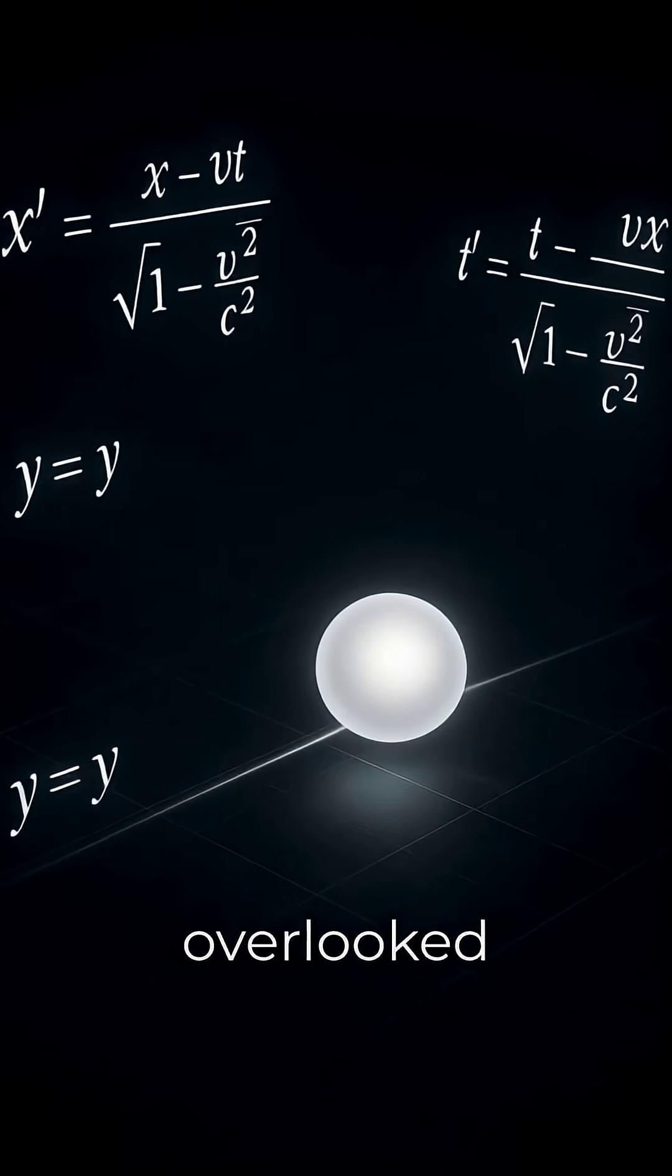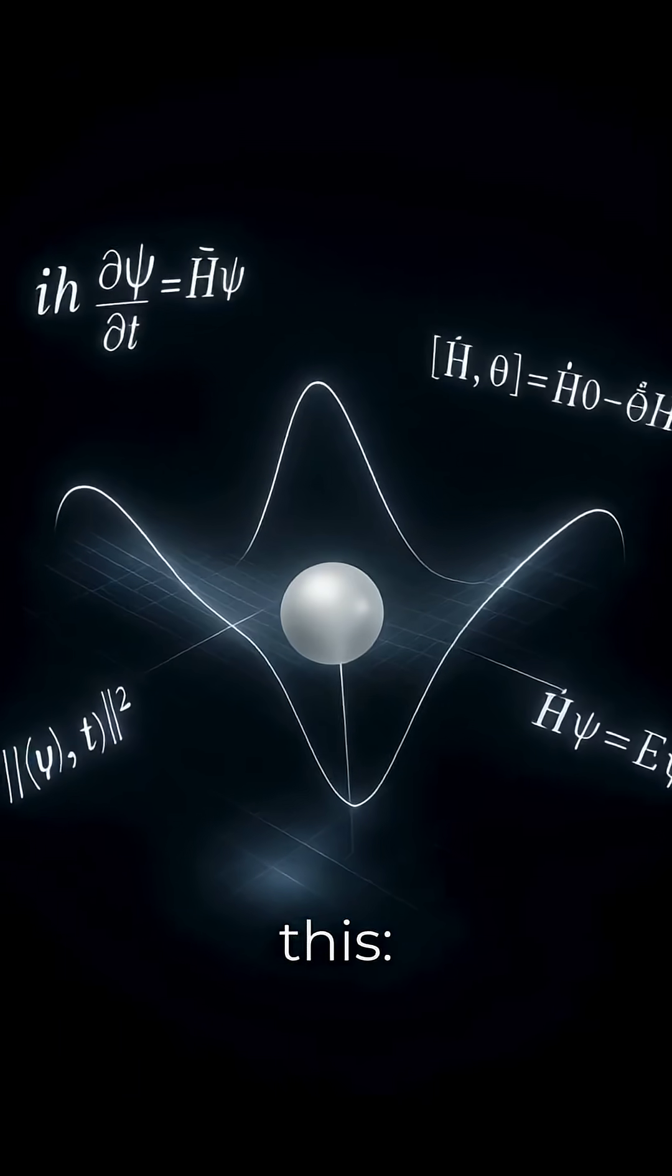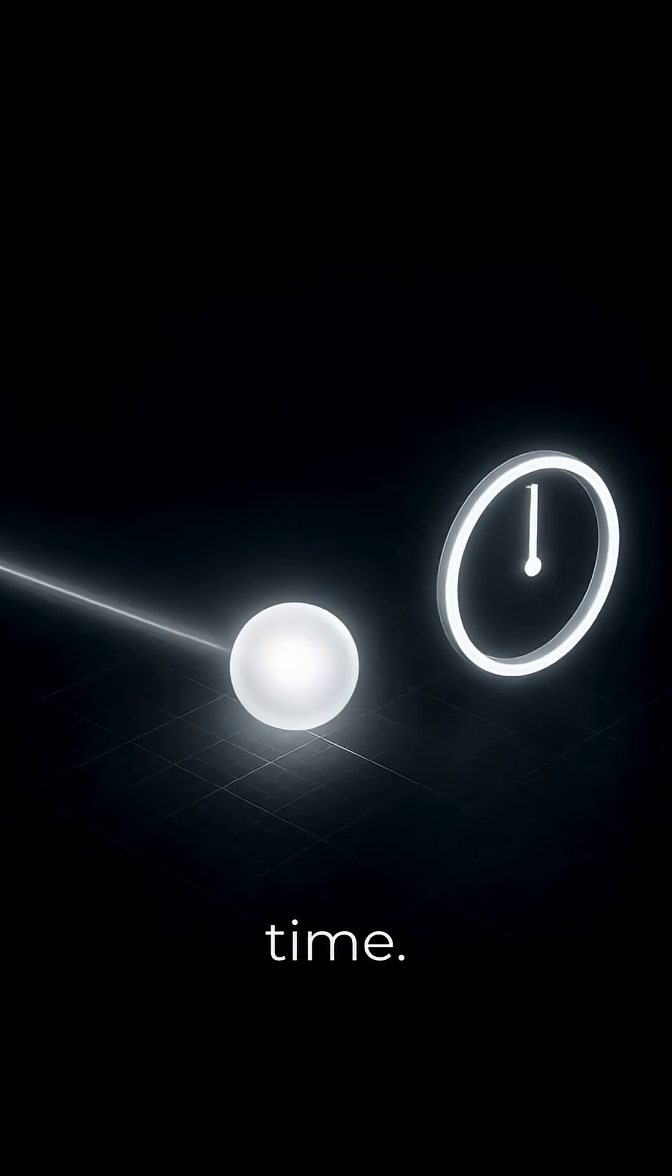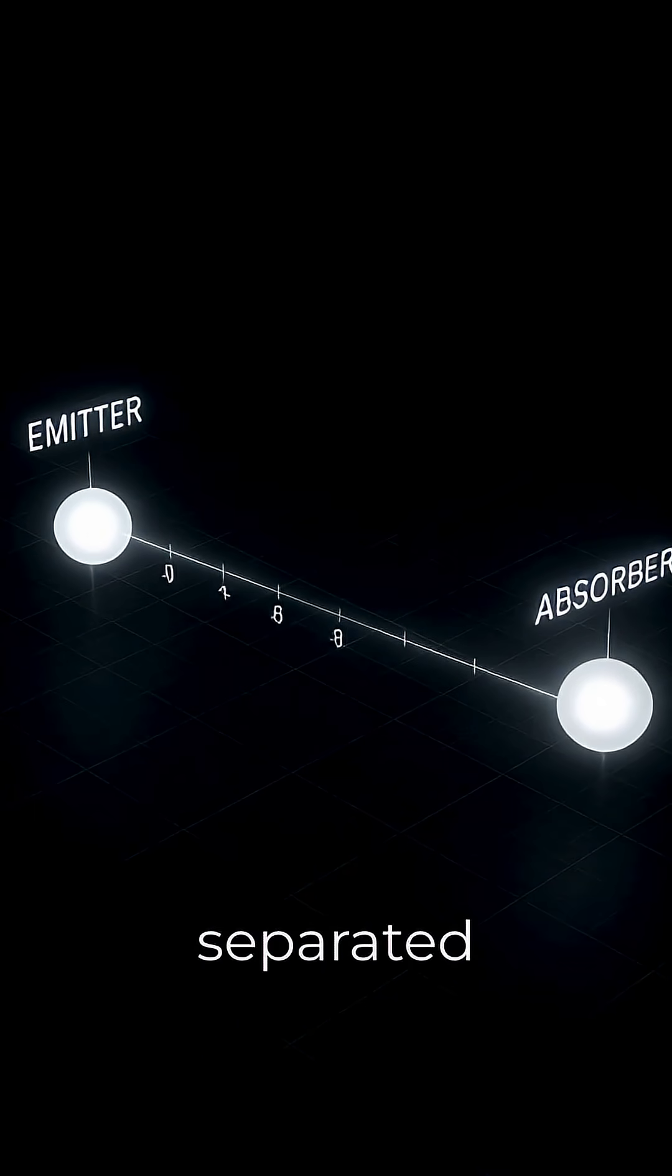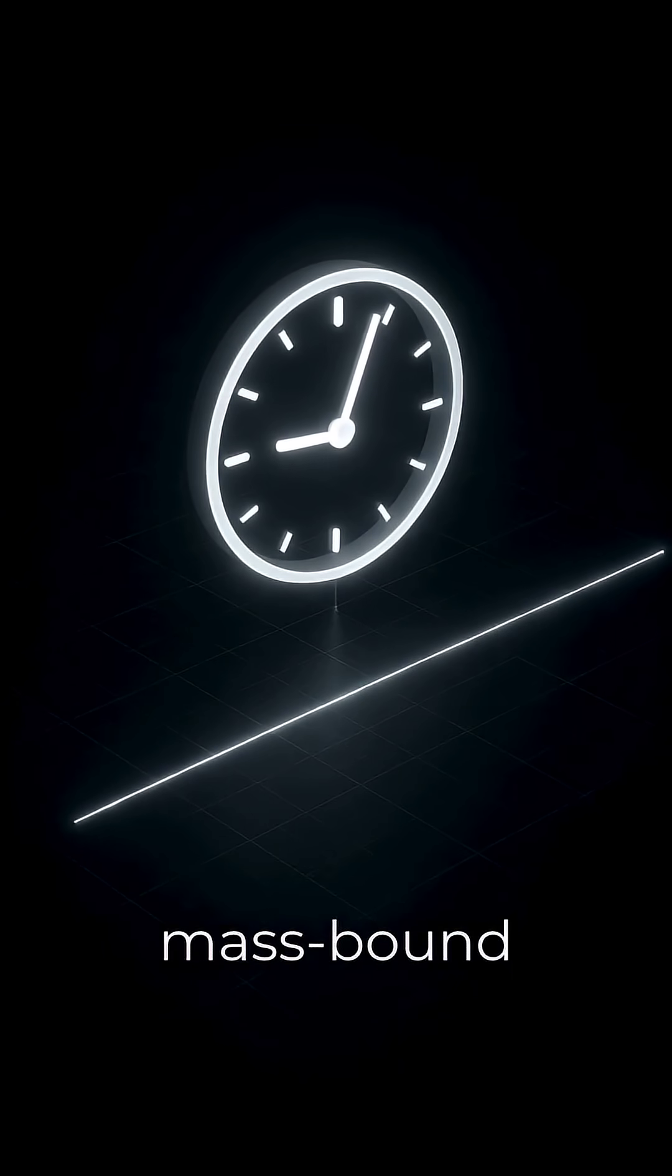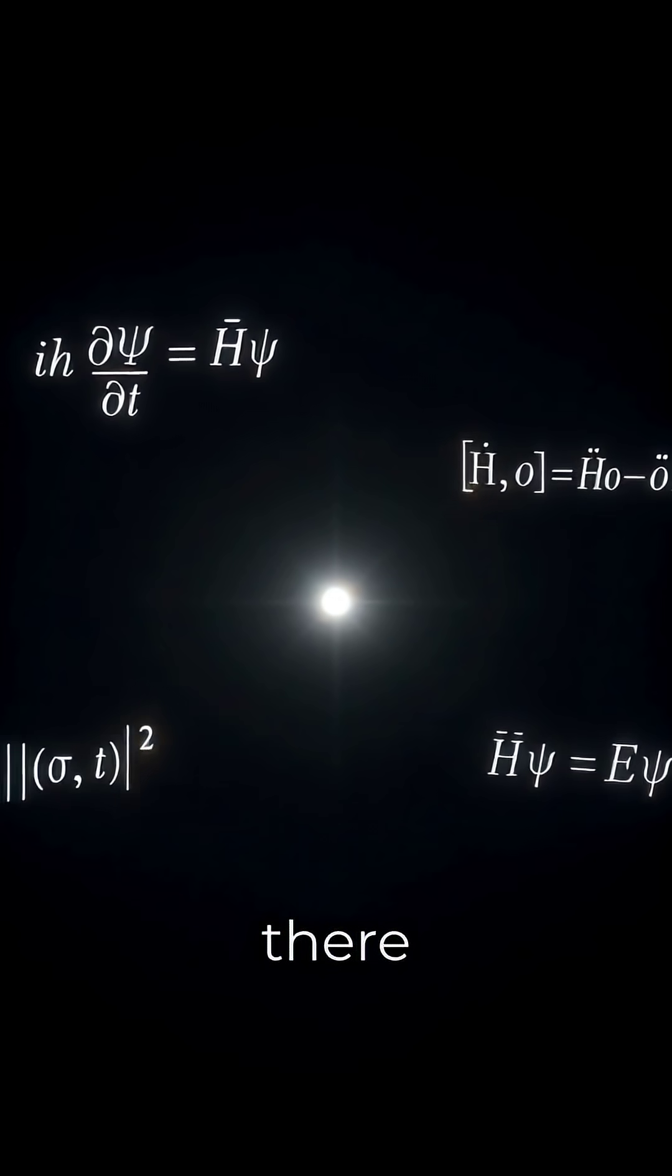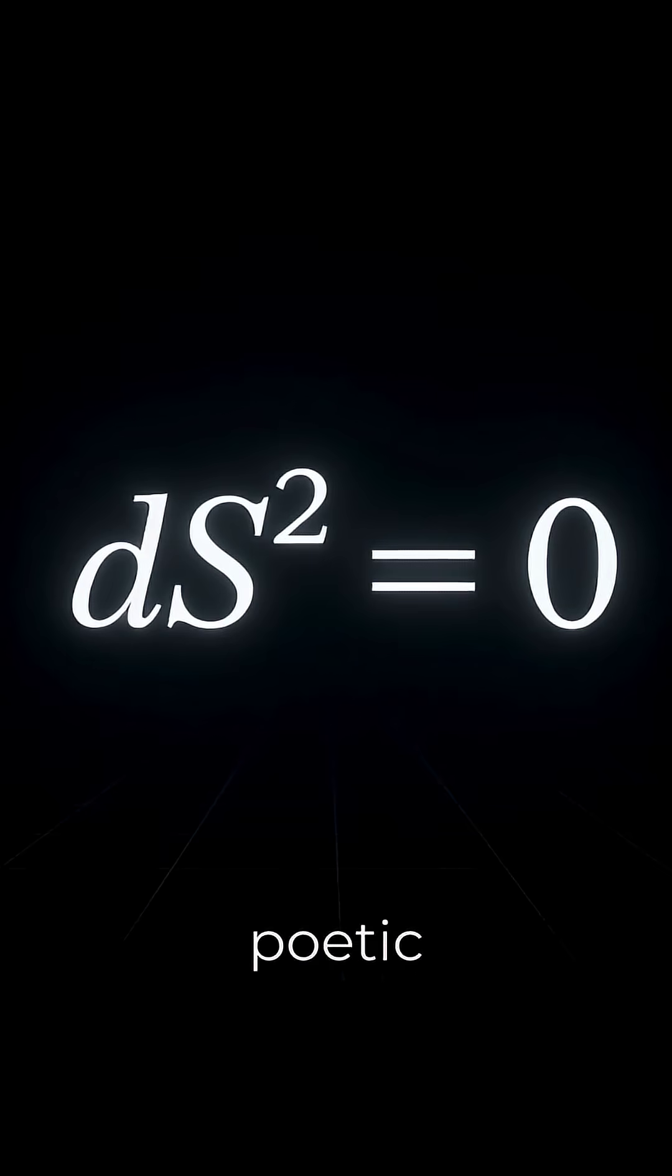In standard physics, one of the most overlooked yet profound implications of special relativity is this: a photon does not experience time. The moment it is emitted and the moment it is absorbed are separated by vast distances and long durations as seen by mass-bound observers. Yet from the photon's perspective, there is no separation at all. This is not merely a poetic expression.